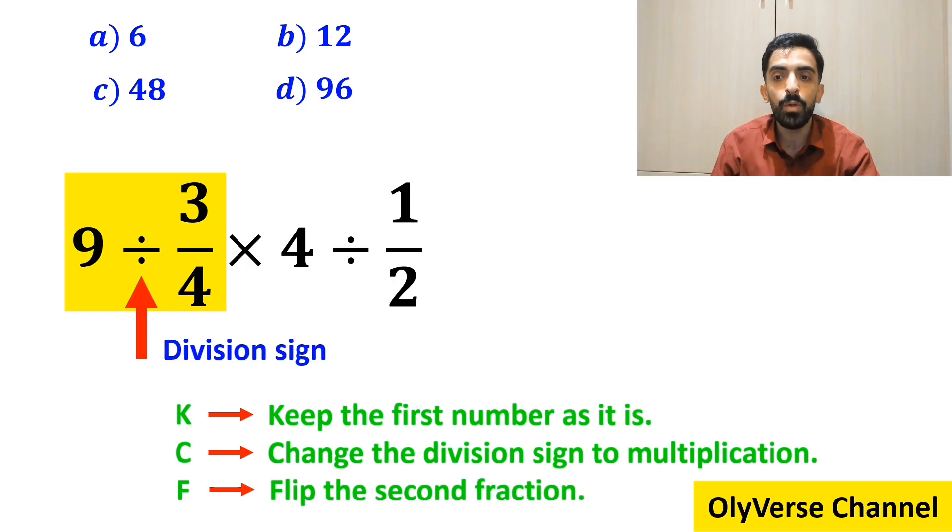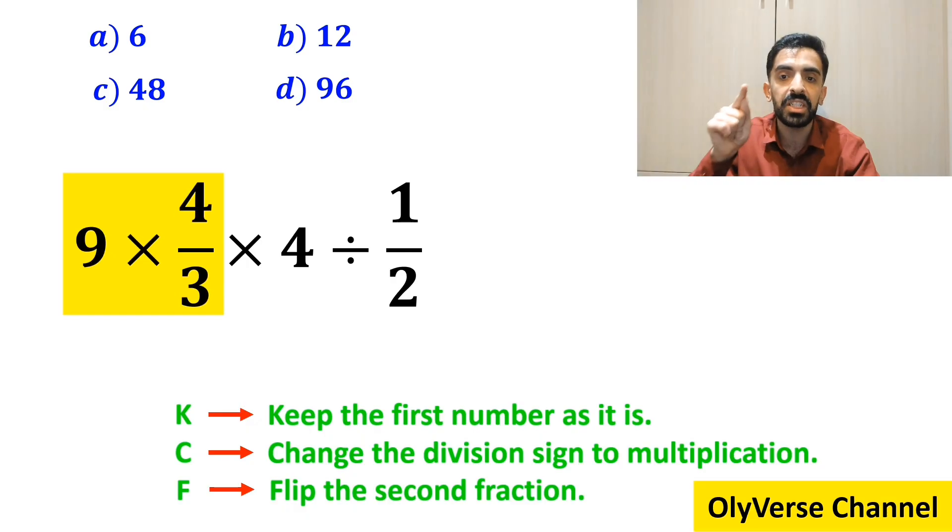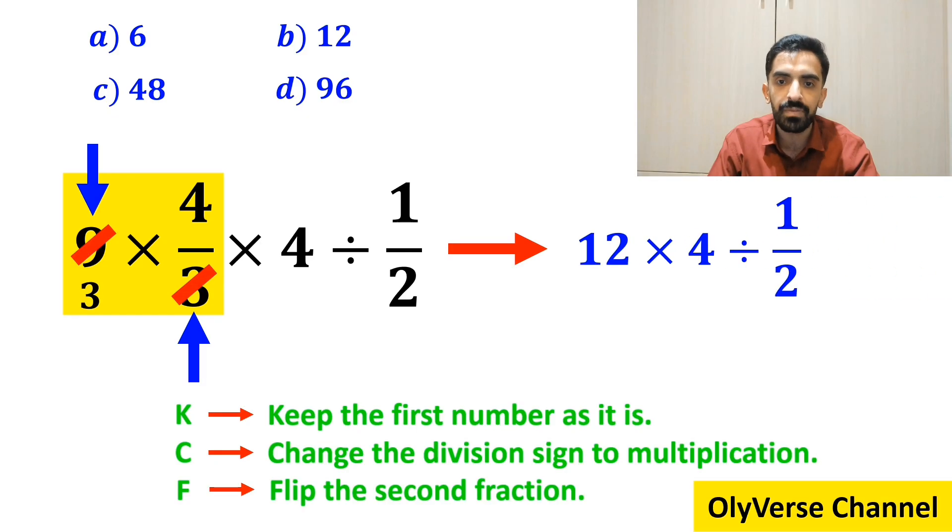So, we remove the highlighted part and replace it with 9 multiplied by 4 over 3. As you can see on the screen, the 9 and the 3 in the denominator can be simplified. And we can write this expression as 12 times 4 divided by 1 over 2.